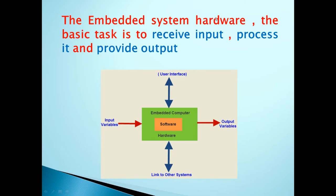The basic task of embedded system hardware is to receive input, process it, and provide the output. You can take the input from the input variable — it may be a temperature, pressure, or any physical quantity you can measure or monitor. The input physical quantity needs to be converted from analog to digital input, because the computer or embedded system can only understand digital data — it doesn't understand analog data.